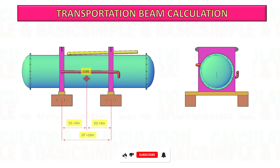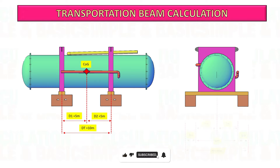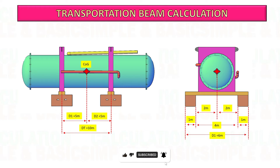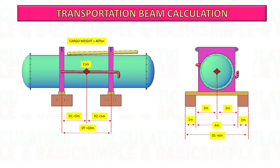For this example, you will jack down a 40-ton cargo into support and the length of the transportation beam is 6 meters. Consider the cargo center of gravity is at the center. The longitudinal distance from each support to the center of gravity of the cargo is 5 meters, and at the transverse direction, 4 meters is the unsupported length of the transportation beam.